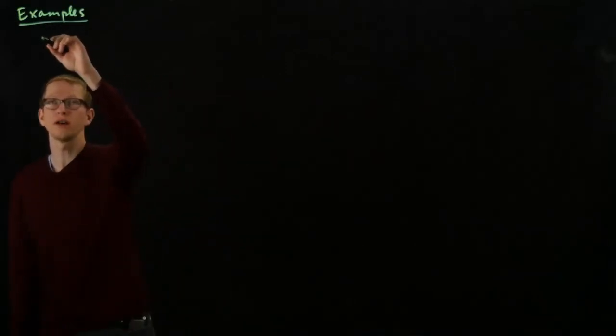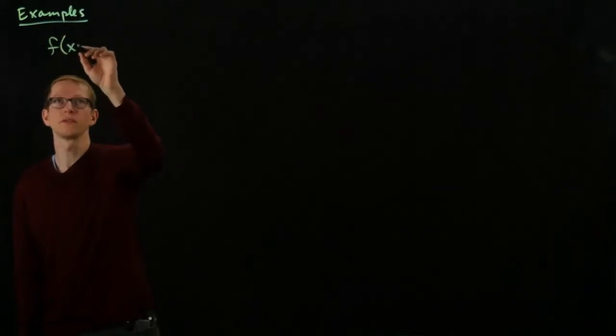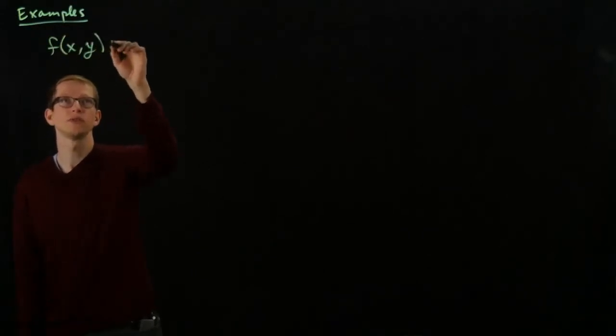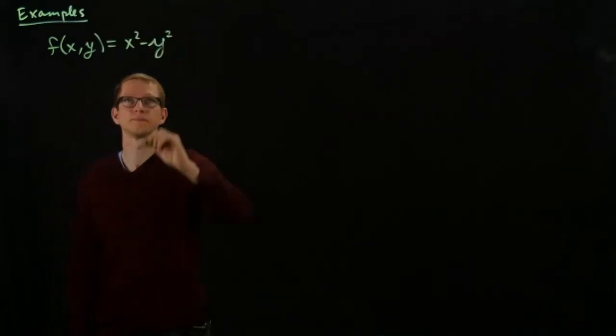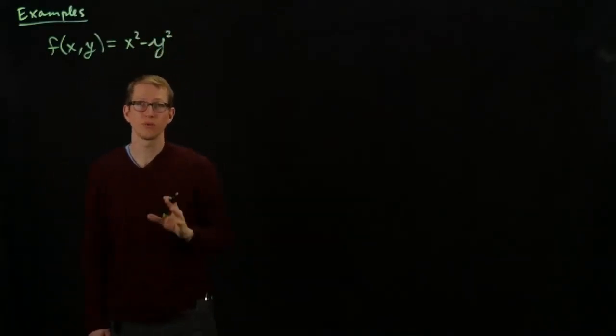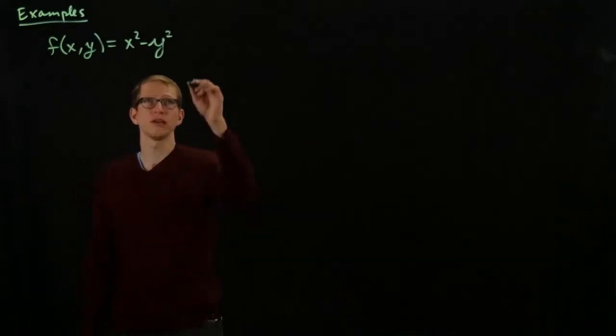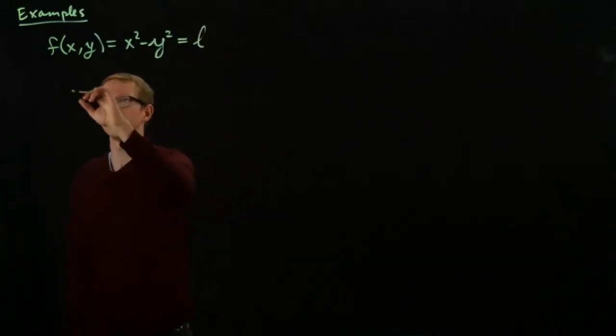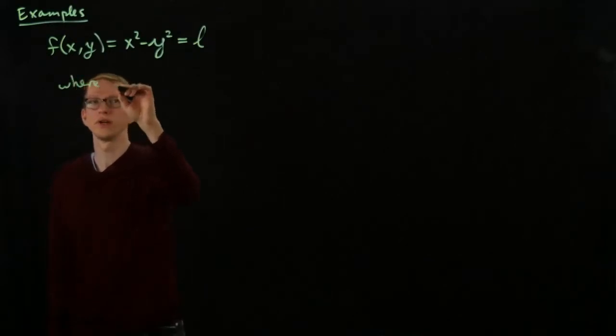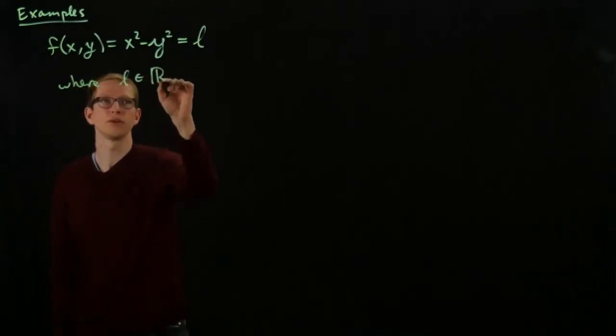So what we're going to do is, as an example, let's just look at the function given by a function of two variables, given by x squared minus y squared. And what we're going to do is we're going to look at certain level sets, so we're going to equate this to equal to some number L, where L is some number in R.